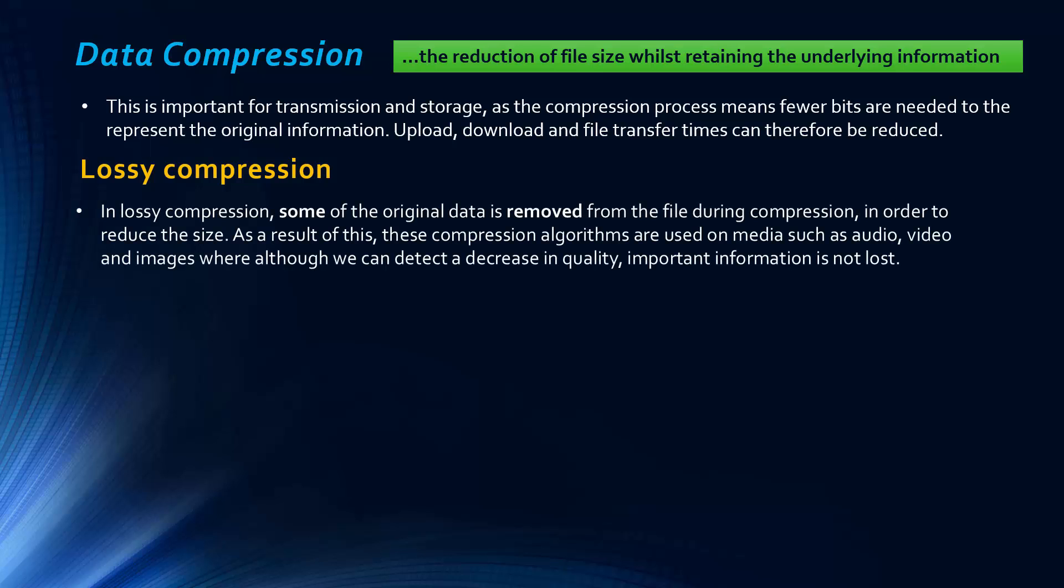The type of compression that actually deletes data is lossy compression. In this compression, some of the original data is removed from the file during compression. It's selectively discarded in order to reduce the size. It's probably the most obvious way to reduce the size of a file, to delete some of it, but the point is it deletes data that's not totally integral to the file. After a file is decompressed, after we uncompress it, the file isn't the same as before because we lose some of the data.